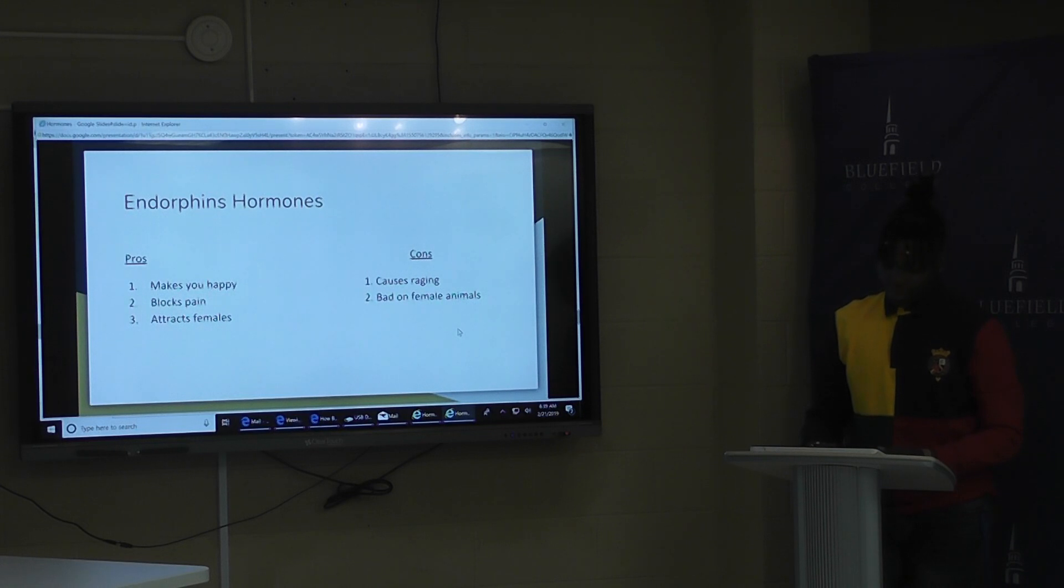So what is an endorphin hormone? Endorphins are like your own private narcotic. They have neurotransmitters that chemically pass along signals from one neuron to another.